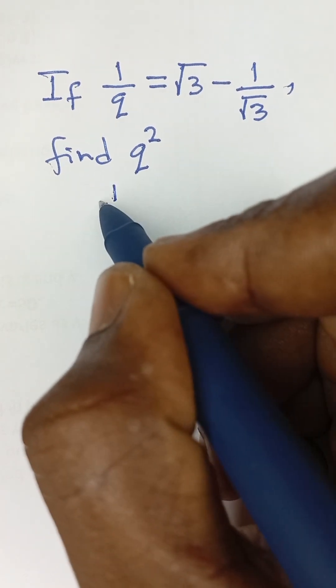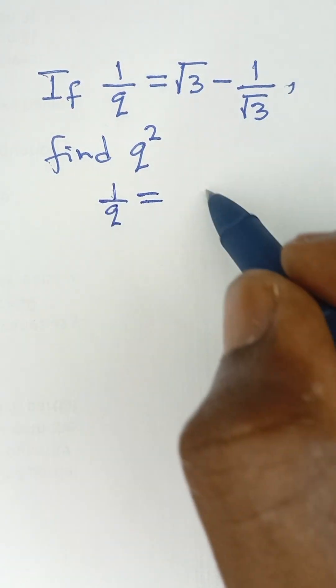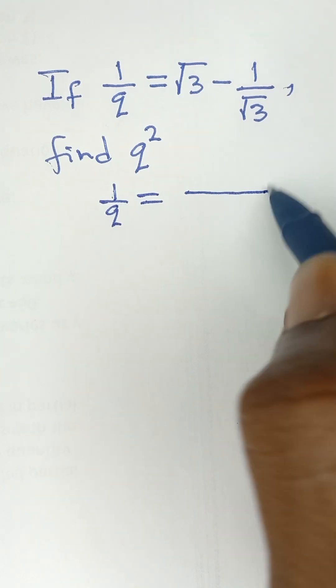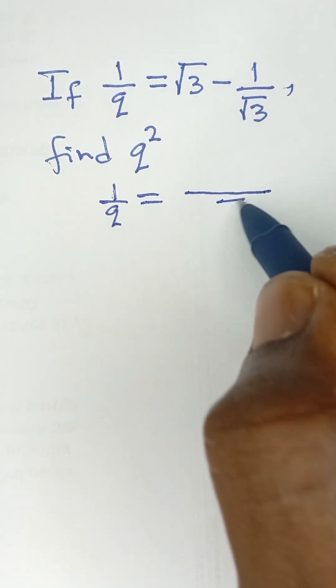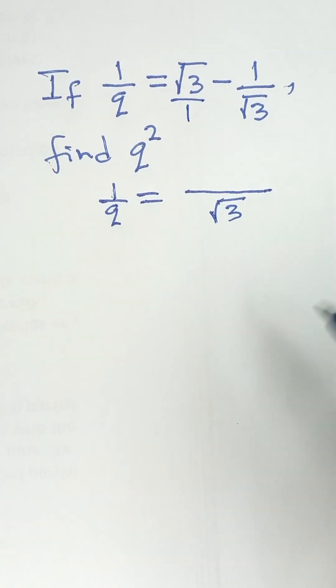1 over Q now is equal to... let's add these two together. The LCM is root 3. Don't forget, this is like root 3 over 1.